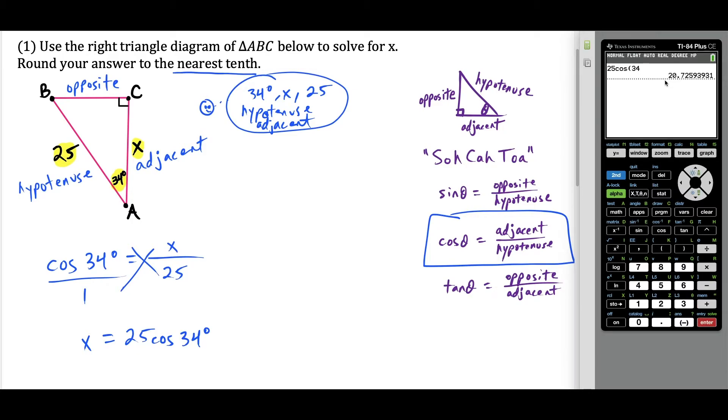So you have 25 cosine of 34. So we just press enter, and we're rounding to the nearest tenth. So that's going to be 20.7. So we could just say our answer to the first question here is going to be 20.7. And once again, we're rounding to the nearest tenth, this is our final solution to the first one.